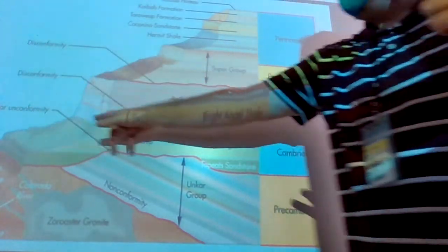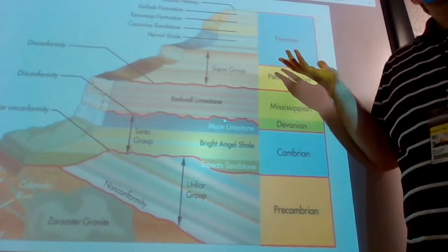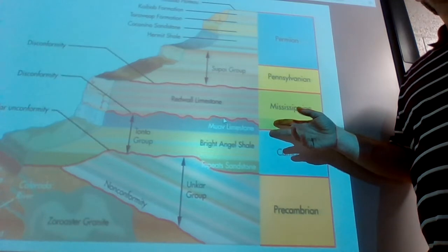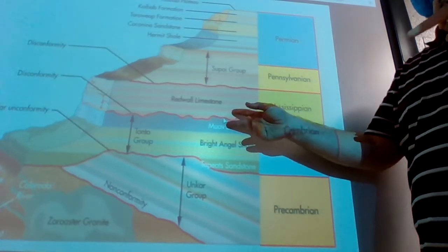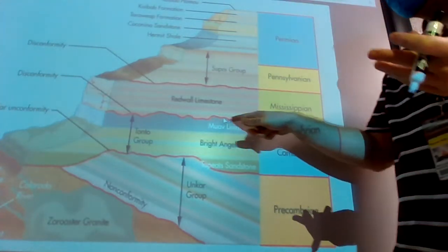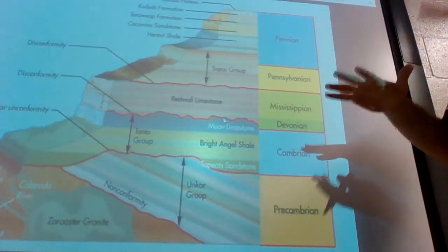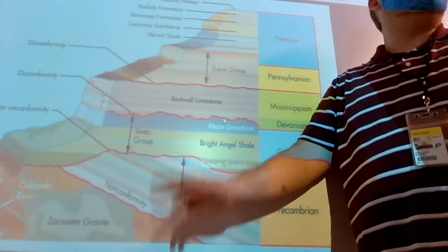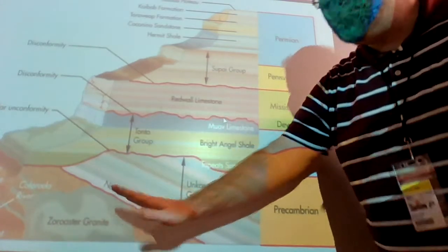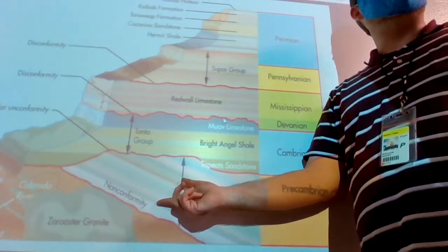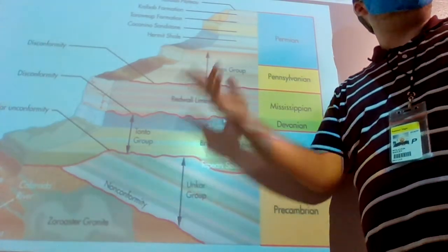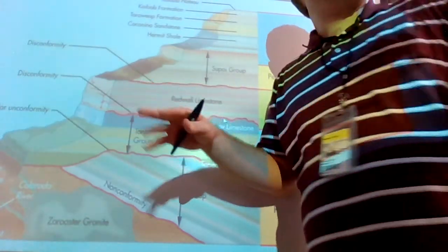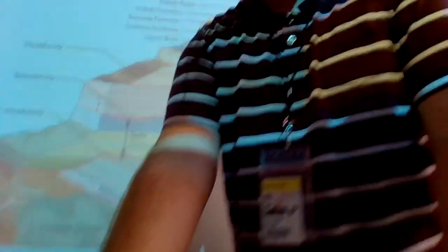A disconformity is when there's no obvious visual indication of missing time — you have to go in and date the layers. For example, if you go from Cambrian to Devonian with nothing in between, there's a huge gap. That's a disconformity — erosion happened and those pages weren't written down. A non-conformity is where you have igneous rock right up against sedimentary rock. When we talk about the history book and its pages, we're really talking about sedimentary rocks.